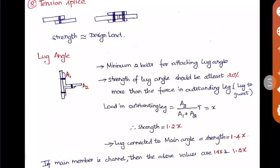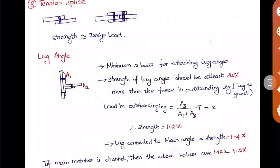The main thing to be noted here is the strength of this connection. The strength should be at least equal to the design load of that bolt or rivet, so that the connection is very strong. This is the important point in tension splice.